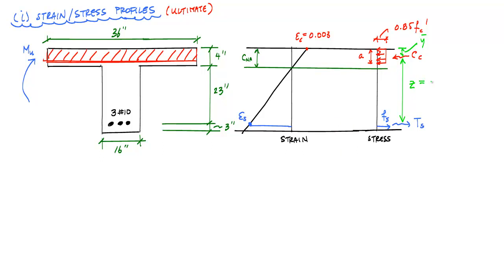I want to emphasize that this drawing assumes the depth of the equivalent stress block A is less than the height of the flange of 4 inches, giving us a nice rectangular compression zone. If this turns out not to be true, we'll have to redo the formulation and modify the drawing to reflect what's really going on.